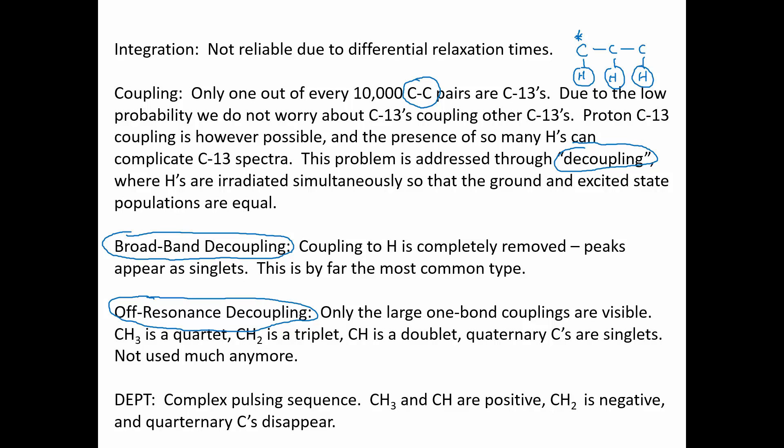Another more modern technique is called the DEPT technique. We hit the sample with a complex series of pulses — there isn't enough time in this class to explain the full theory — but the net appearance is that CH3s and CHs appear as positive singlet peaks, CH2s appear as negative peaks, and quaternary carbons disappear entirely. We can compare the broadband decoupled spectrum with a DEPT spectrum to determine the number of hydrogens attached to a specific carbon of interest.